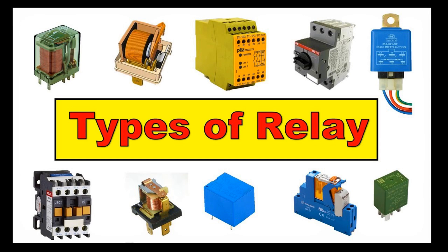Once the current stops flowing through the coil, the magnetic field dissipates, and a spring returns the armature to its resting position, resetting the contacts. Types of electromagnetic relays: Single-pole single-throw (SPST) has one input and one output terminal, and operates as a simple on/off switch.